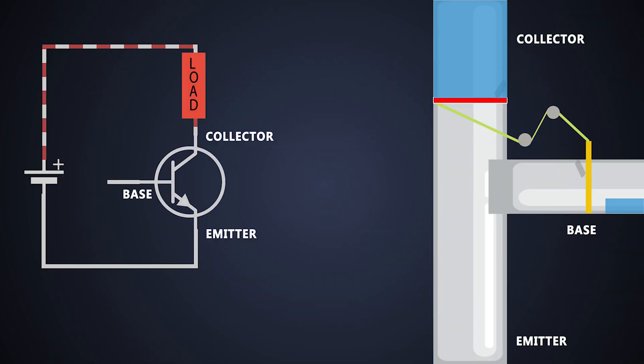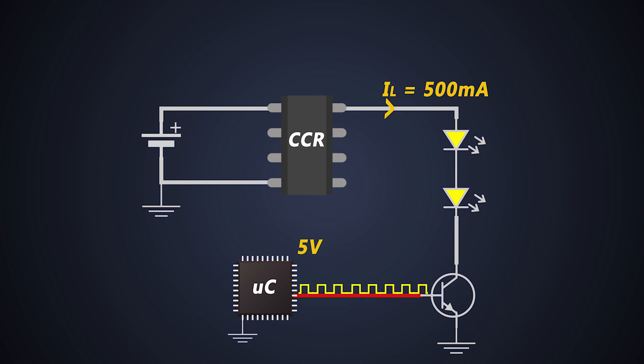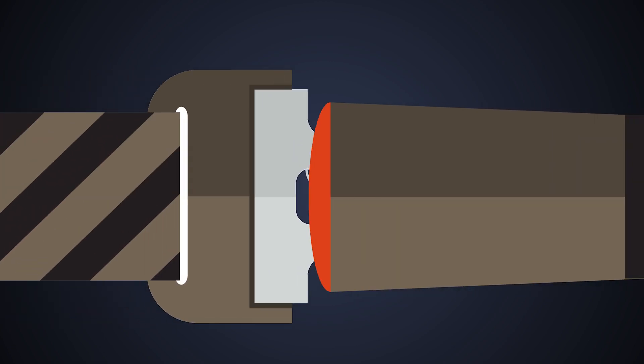Last time we saw the basics of the NPN and PNP transistor and NPN transistor as a low side switch. This time we'll see how a PNP transistor can be used as a high side switch. So let's start.